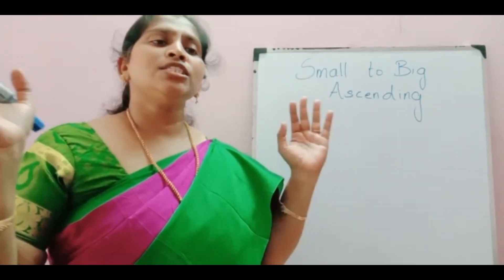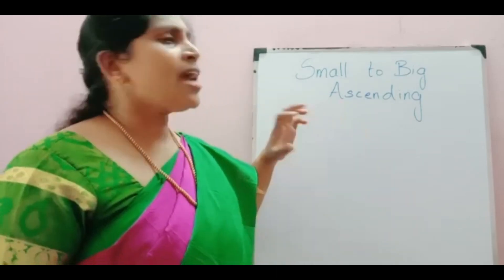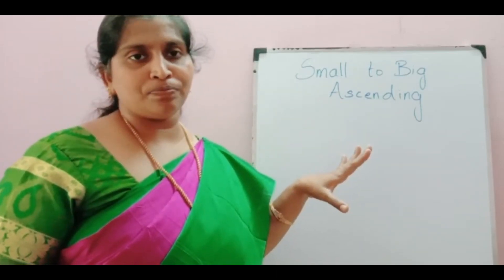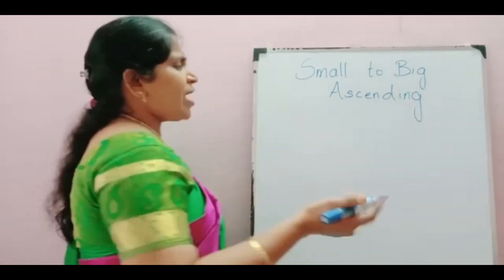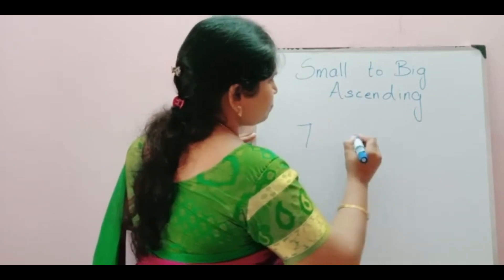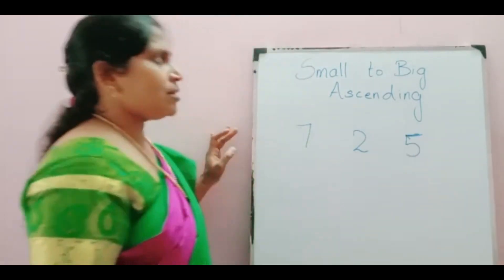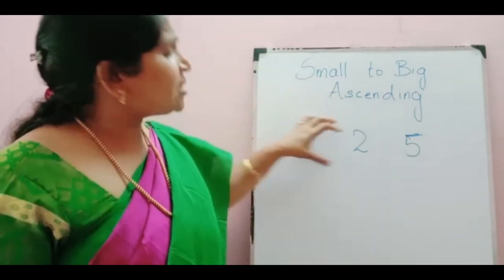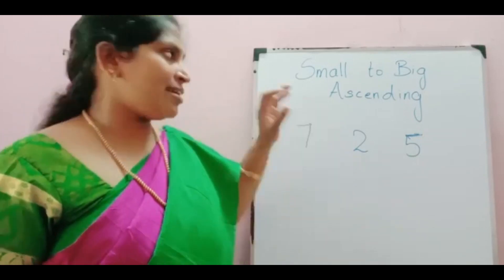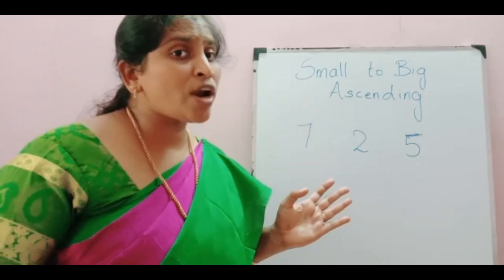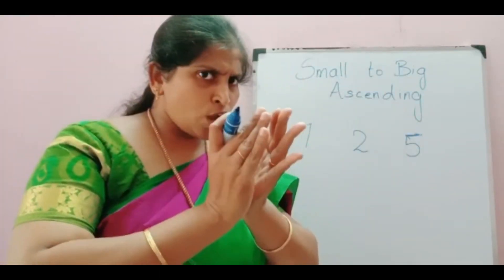Today we will do both ascending and descending. In ascending, I will do one example from numbers 1 to 10. Write these numbers in ascending order: 7, 5, 2. Ascending means small to big. Which number is small here — 7, 5, or 2? Good, it's 2. So we write 2 first.